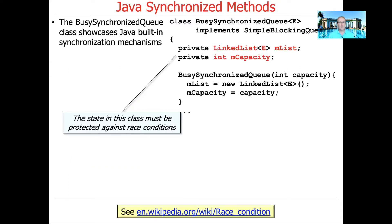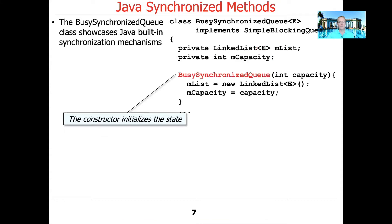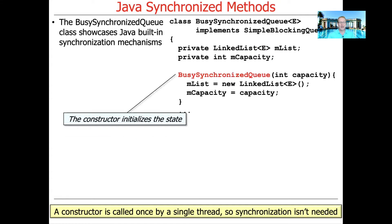This is the state that we need to protect from concurrent access — concurrent read-write access and update access — in order to prevent race conditions. We have a linked list, and we have a count of the number of elements that are in the queue. Here's the constructor — it initializes the state. This constructor is only ever called once by a single thread, so there's no need for the constructor to be synchronized.